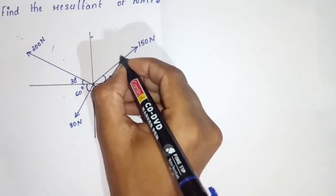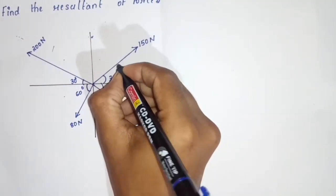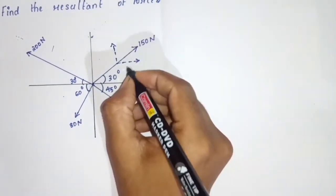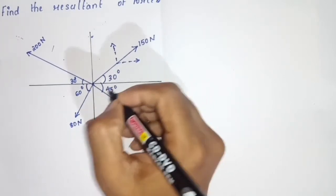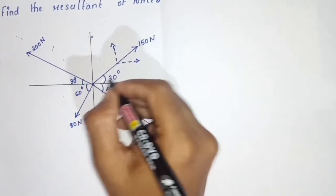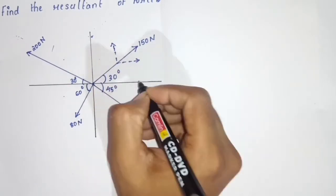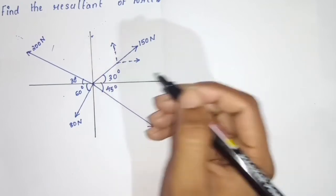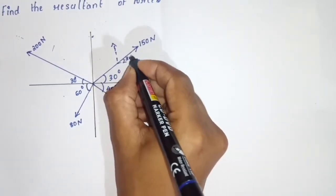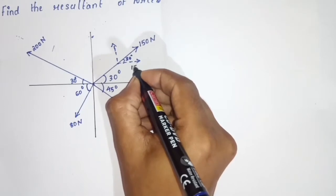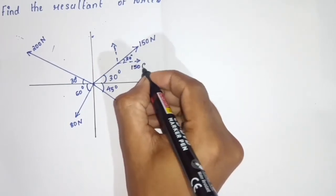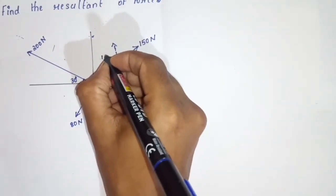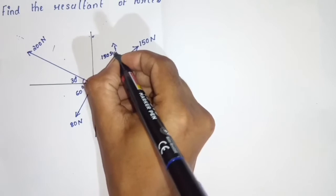Let's resolve 150N. We have to resolve it into the horizontal component and vertical component. The angle is 30 degrees, so the horizontal component is 150 cos 30, and the vertical component is 150 sin 30.